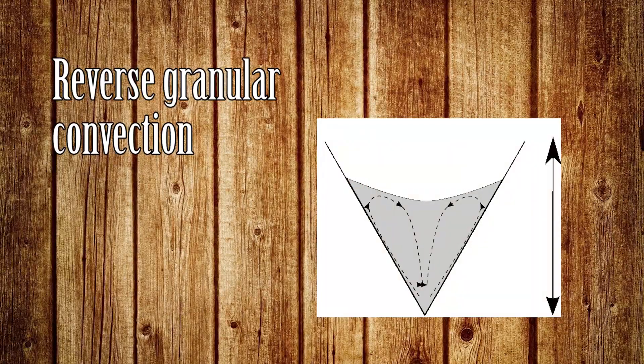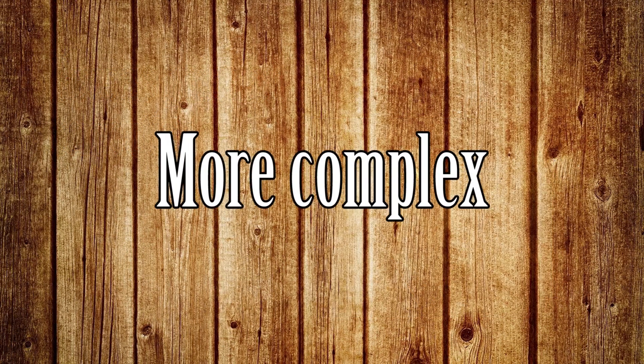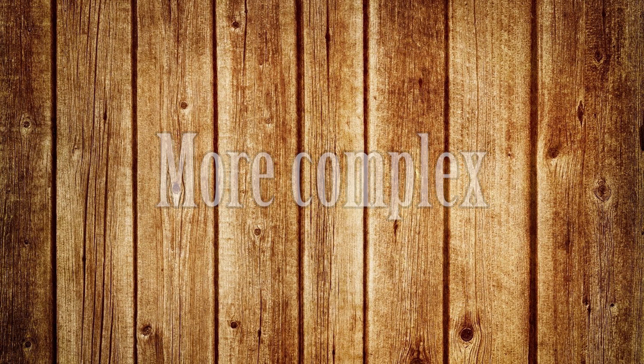By changing this boundary condition it is even possible to create a reverse Brazil nut effect. For example by using a cone instead of a cylinder. This shows that the Brazil nut effect is much more complicated than the two primary mechanisms discussed.